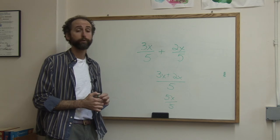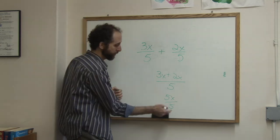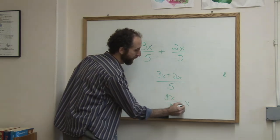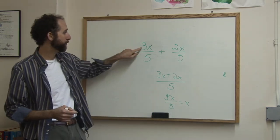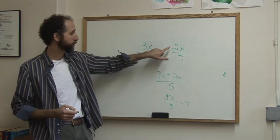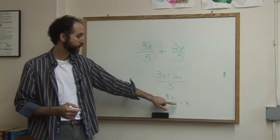And of course, whenever possible, you should reduce a fraction. So 5x over 5, the 5's cancel out, and I actually wind up just having x as the answer. So the answer to 3x over 5 plus 2x over 5 is actually just x.